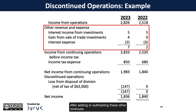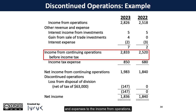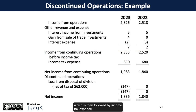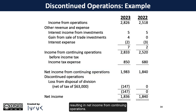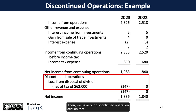After adding or subtracting these other revenues and expenses to the income from operations, we end up with income from continuing operations before tax, which is then followed by income tax expense, resulting in net income from continuing operations. Then we have our discontinued operations section, which consists of the loss from disposal of the division, net of tax, of $147,000.